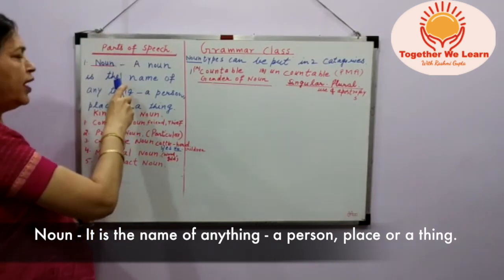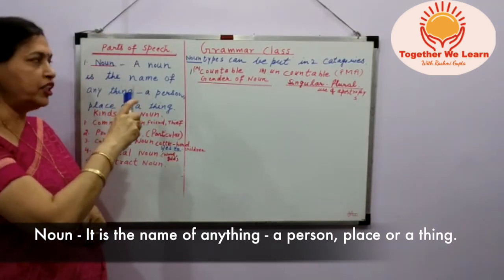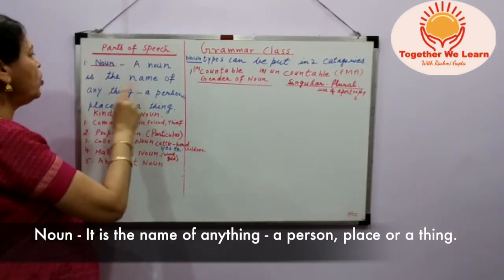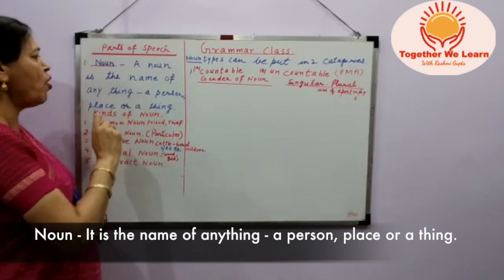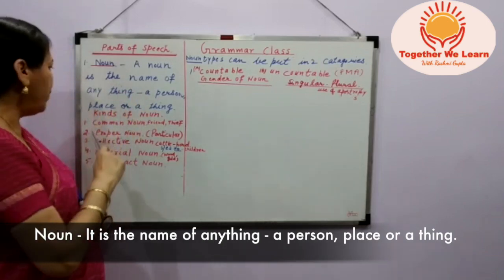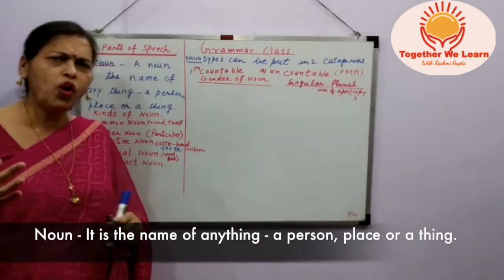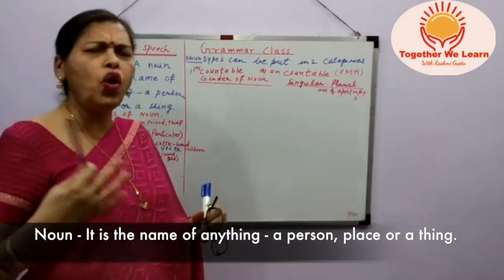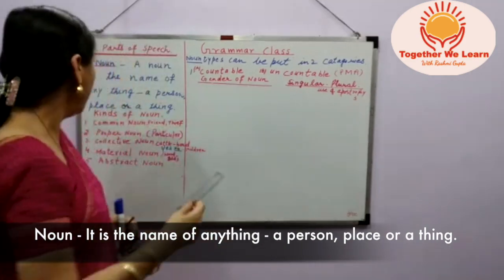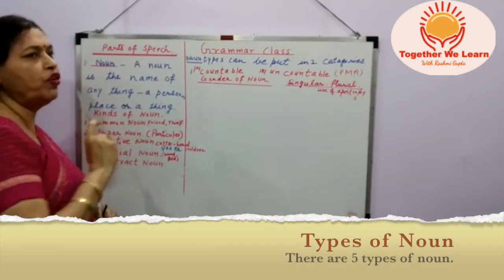So let me explain again the definition. A noun is the name of anything — a person, place, or a thing. That is a common definition you all know very well. And here are the kinds of noun.